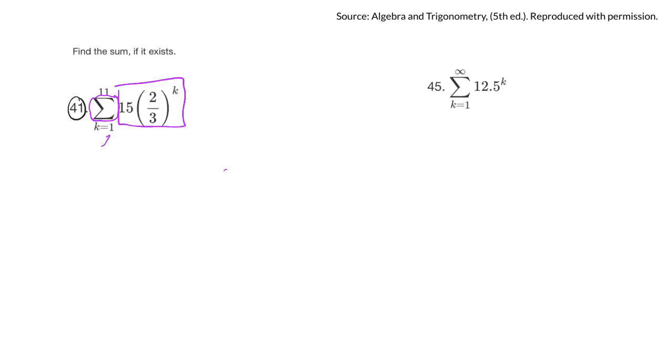And then this says start plugging in a k of 1 into here, then plug in a 2, then plug in a 3, and keep going until you get to 11. That would take quite a bit of work, but there's probably a formula I can use to find that sum.